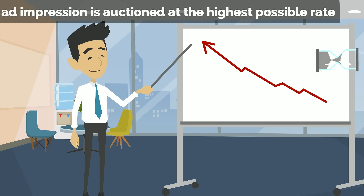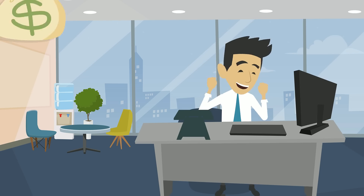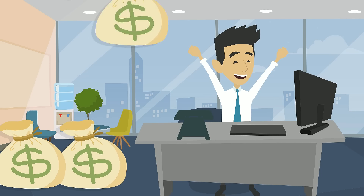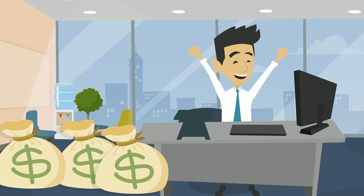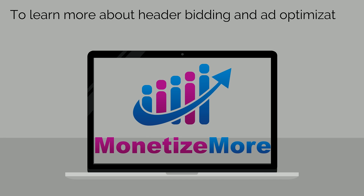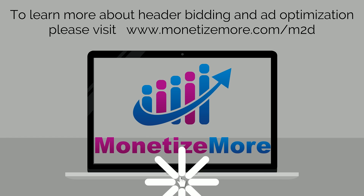each ad impression is auctioned at the highest possible rate in real-time, increasing revenues as much as 50%. To learn more about header bidding and ad optimization, please visit www.monetizemore.com.